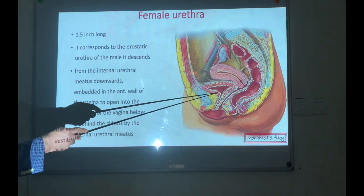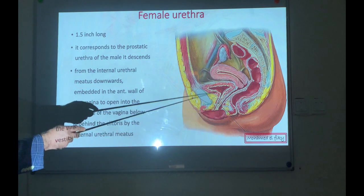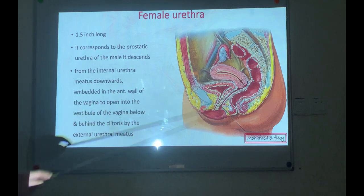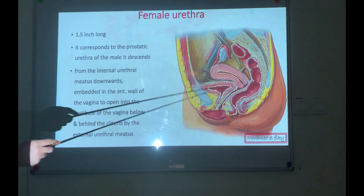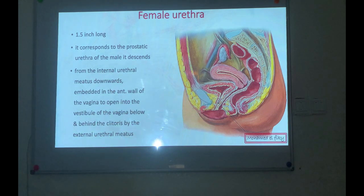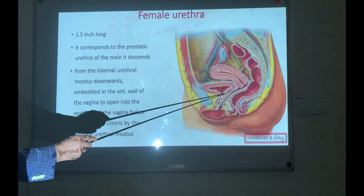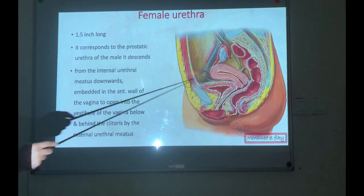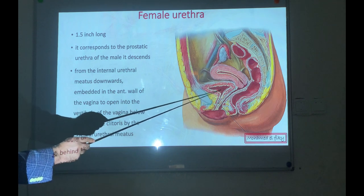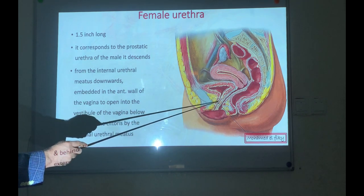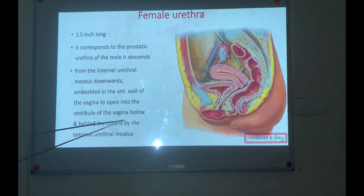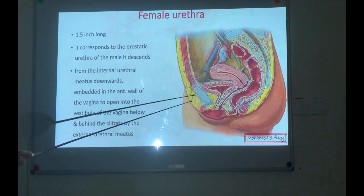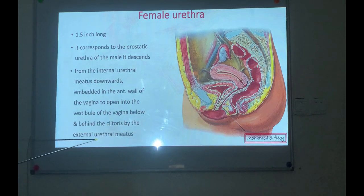The female urethra is about one and a half inches (4 centimeters). It corresponds to the prostatic urethra of the male. It extends from the internal urethral meatus, descends embedded in the anterior wall of the vagina, and opens in the vestibule of the vagina below and behind the clitoris.